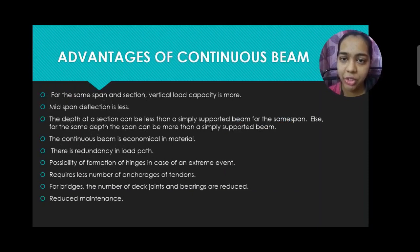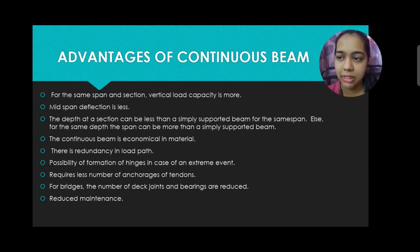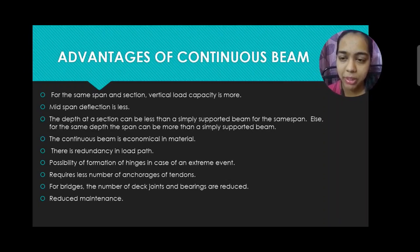Advantages of Continuous Beam: For the same span and section, vertical load capacity is more and mid-span deflection is less. The depth at a section can be less than a simply supported beam for the same span, or for the same depth the span can be more than a simply supported beam. The continuous beam is economical in material and there is redundancy in load paths.